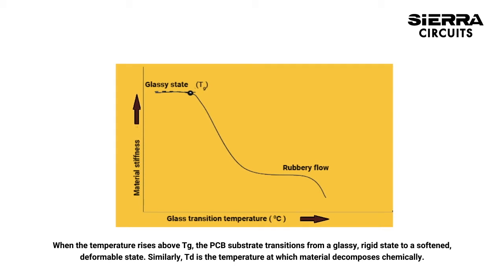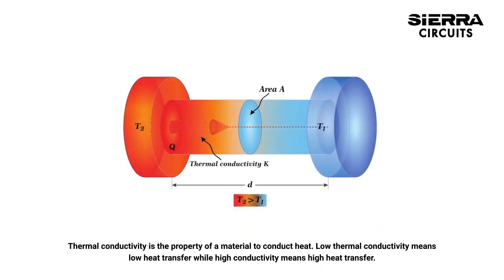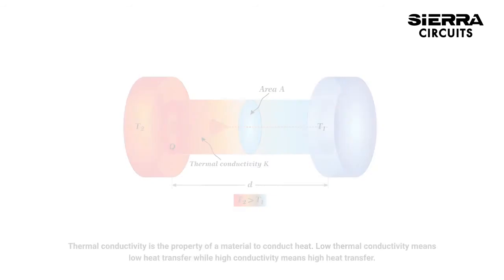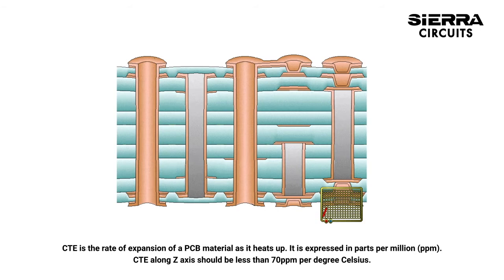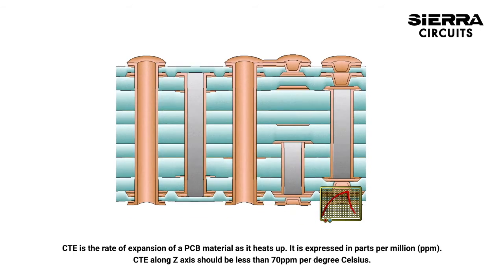Td is the temperature at which a material decomposes chemically. Thermal conductivity is the property of a material to conduct heat; low thermal conductivity means low heat transfer, while high conductivity means high heat transfer. CTE is the rate of expansion of a PCB material as it heats up, expressed in parts per million. CTE along the z-axis should be less than 70 ppm per degree Celsius.